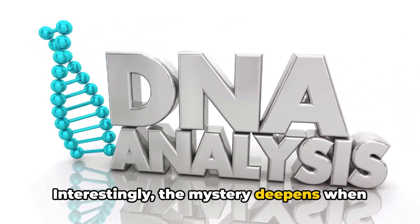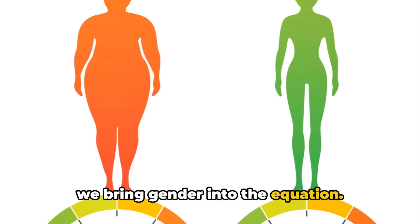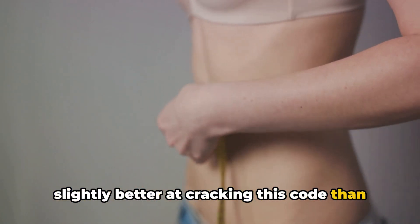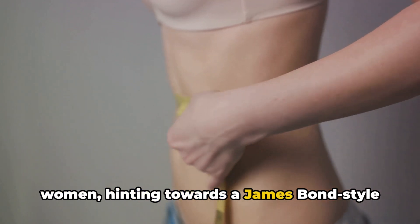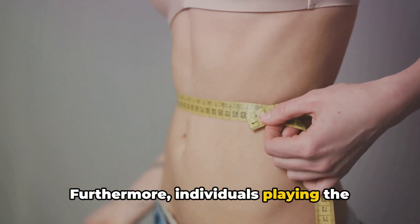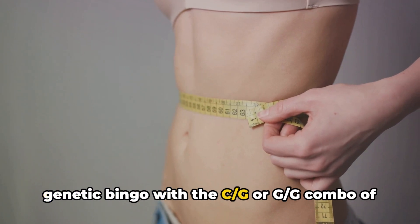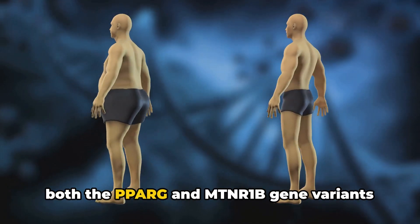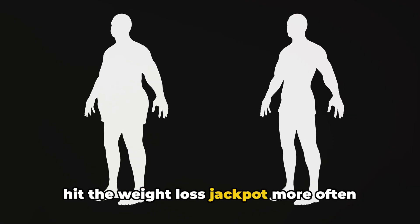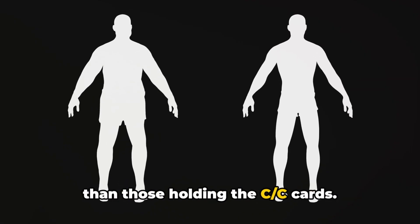Interestingly, the mystery deepens when we bring gender into the equation. Studies have shown that men seem to be slightly better at cracking this code than women, hinting towards a James Bond-style hormonal advantage. Furthermore, individuals playing the genetic bingo with the CG or GG combo of both the PPARG and MTNR1B gene variants hit the weight loss jackpot more often than those holding the CC cards.